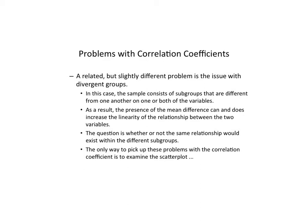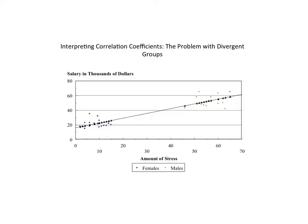A related but slightly different issue is what we call divergent groups. In this case, some form of subgrouping is occurring within your samples that's influencing either your x or y predictor or criterion variables. As a result, there's a mean difference that might be influencing the relationship between x and y. The question is whether or not the same relationship exists between the two subgroups.